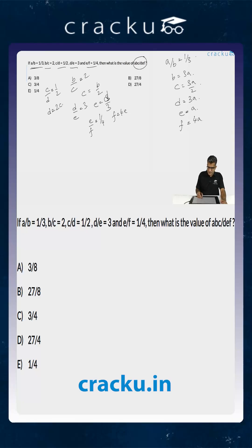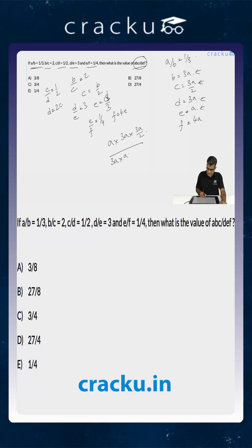We are required to calculate ABC divided by DEF. So A into 3A into 3A by 2, whole divided by 3A into A into 4A. A and A cancel, 3A and 3A cancel, and the remaining A terms cancel, giving the required ratio as 3 by 8, which is equal to option A.